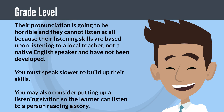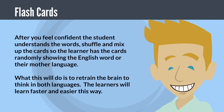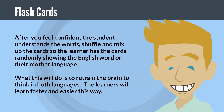You must speak slower to build up their skills. You may also consider putting up a listening station so the learner can listen to a person reading a story. You may want to add flashcards to the lesson. After you feel confident the student understands the words, shuffle and mix up the cards so the learner sees the cards randomly showing the English word or their mother language. This will retrain the brain to think in both languages, and learners will learn faster and easier this way.